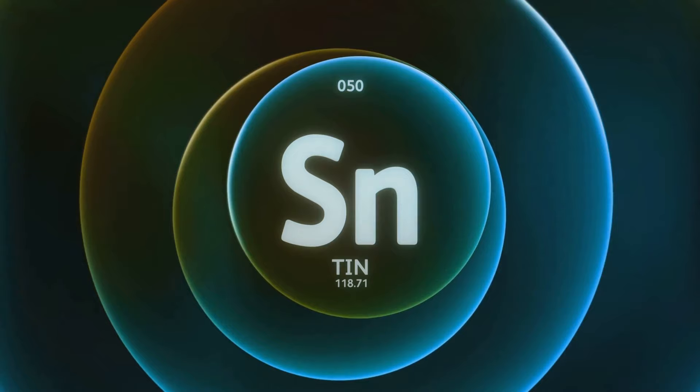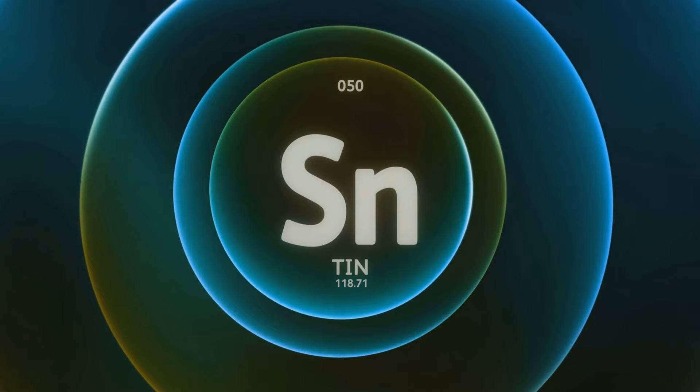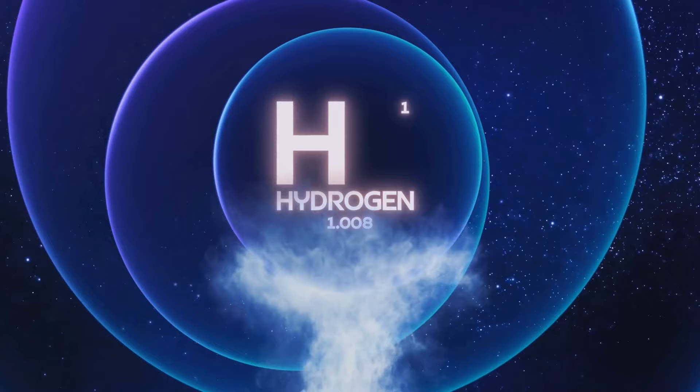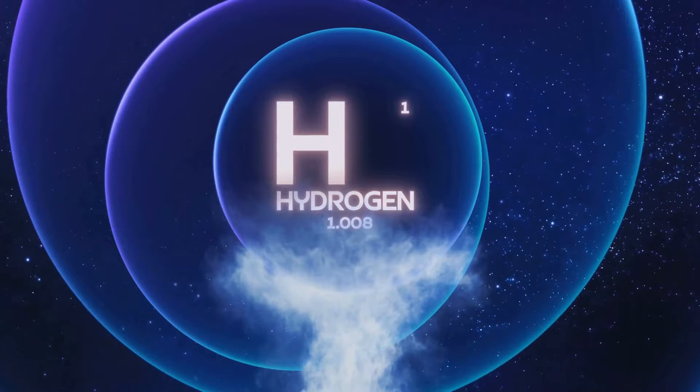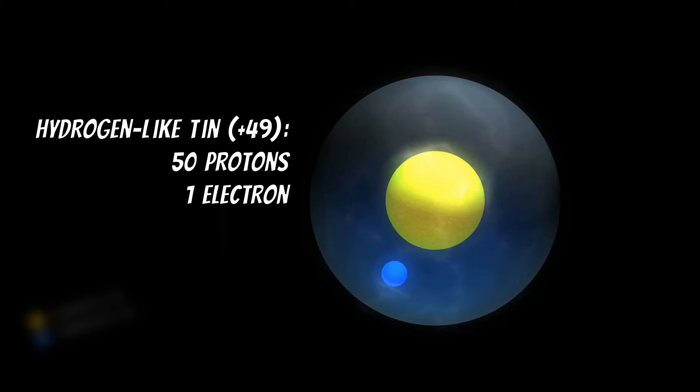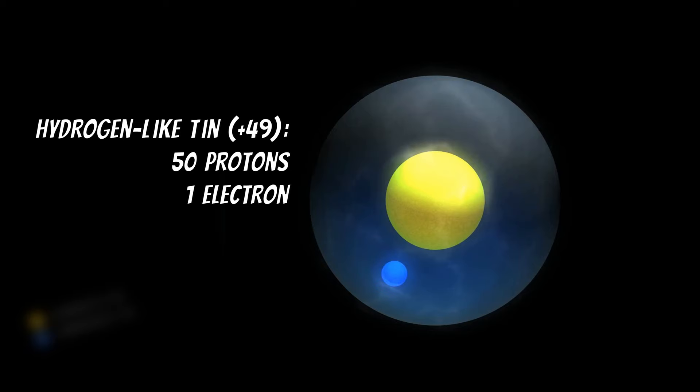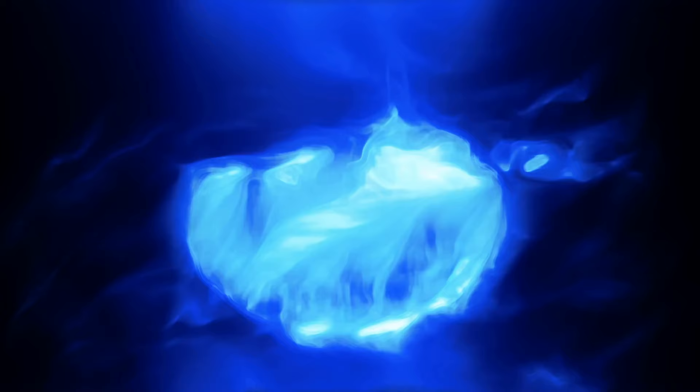The method involves the use of TIN 49+, an element that offers unique advantages in the study of QED. Not only does TIN possess a high atomic number, making it an excellent subject for studying the effects of QED, but when stripped down to a single electron, it behaves remarkably like hydrogen, the simplest and most well-understood atom in the universe. This TIN 49+ is thus called hydrogen-like TIN and is the heaviest hydrogen-like element ever synthesized.